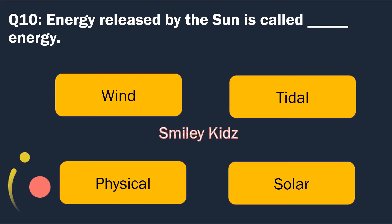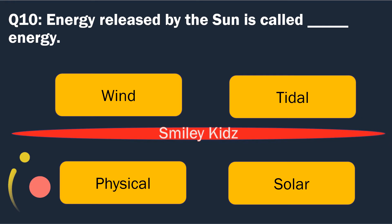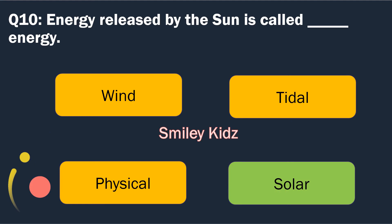Question number 10. Energy released by the sun is called. Options are: Wind, Tidal, Physical and Solar. The right answer is Solar. Energy released by the sun is called Solar energy.